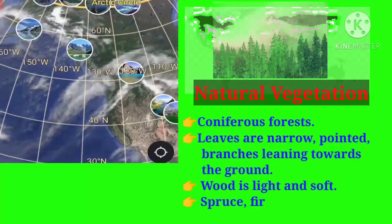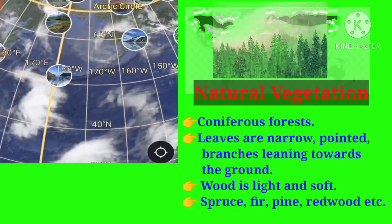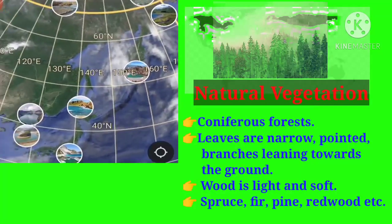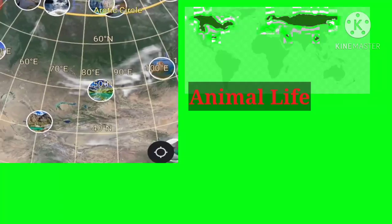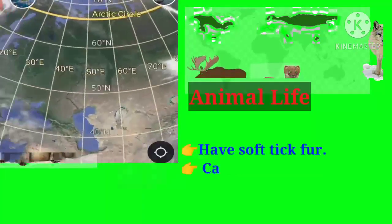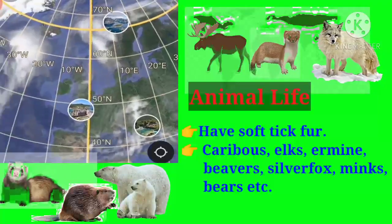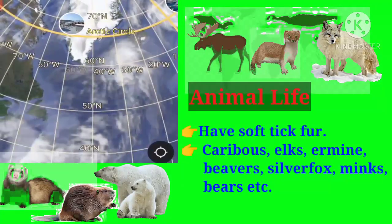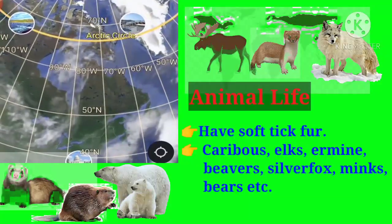Natural vegetation in the taiga region: coniferous forests are found here. The trees have narrow pointed leaves and branches leaning towards the ground; the wood is light and soft. Trees mainly found are spruce, fir, pine, and redwood. Animal life in the taiga region includes animals with soft and thick fur — caribou, elk, ermine, beavers, silver fox, minks, and bears.